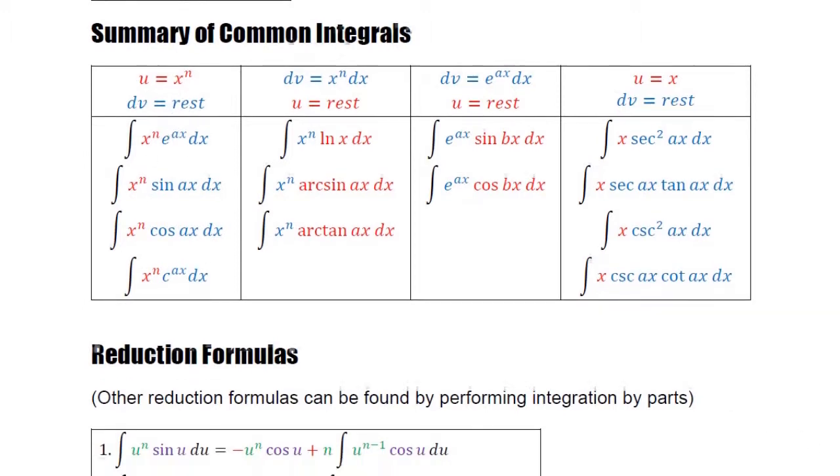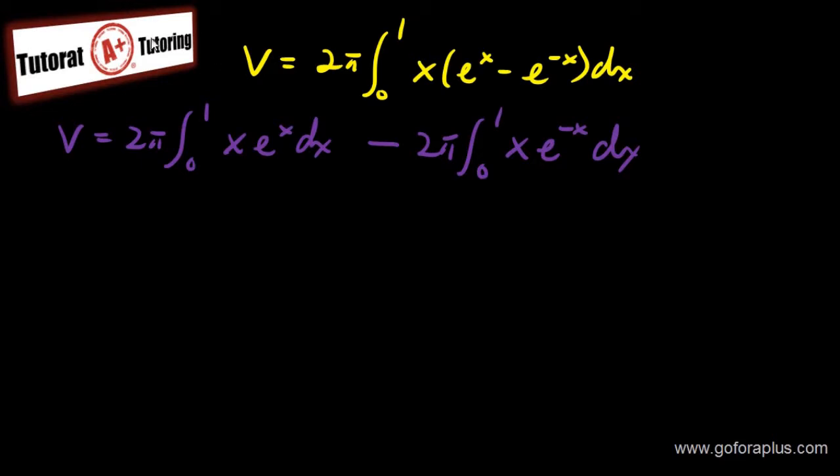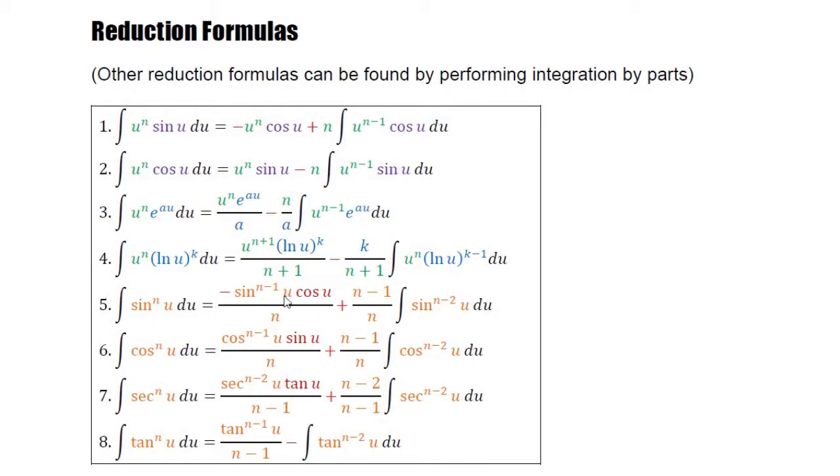So if I use the reduction formula here, I can just apply this equation. If I apply that equation, this is going to give you 2 pi x e to the x, it becomes x e to the x minus e to the x.